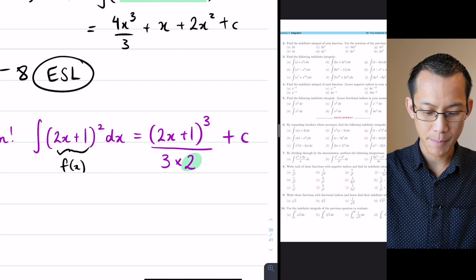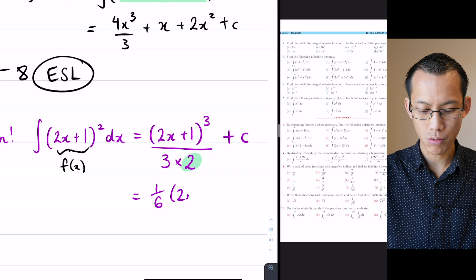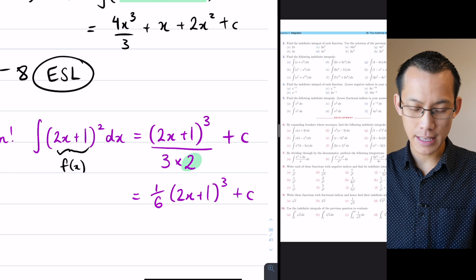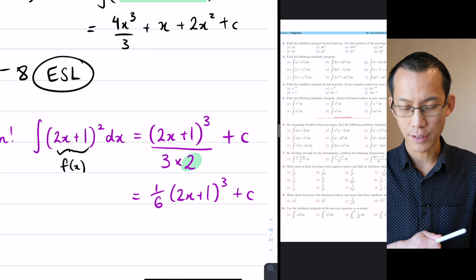I can tidy that up a little bit. I'll write (1/6)(2x + 1)³ plus my constant, and it's very easy to verify that this is the correct indefinite integral by actually differentiating this.